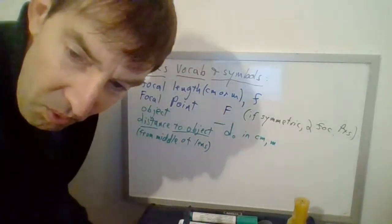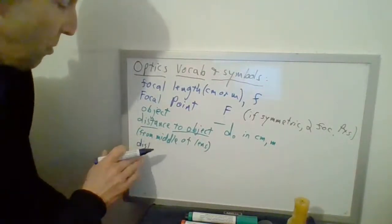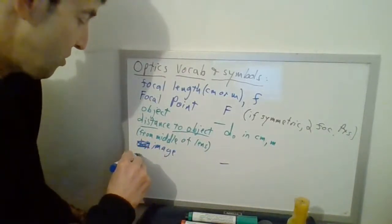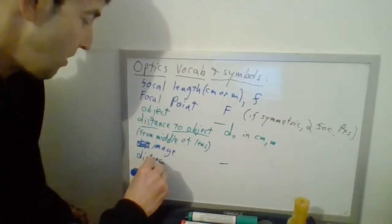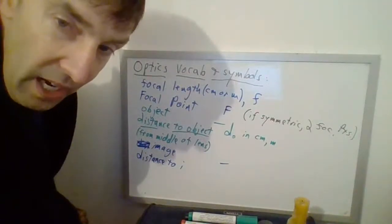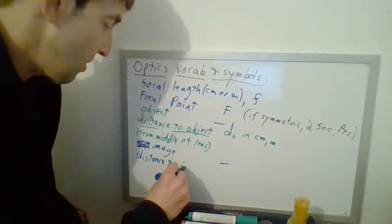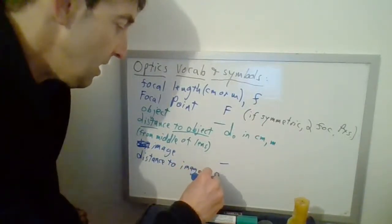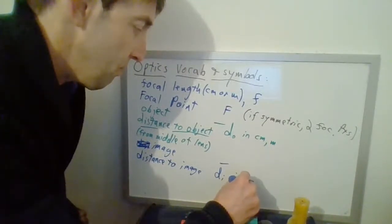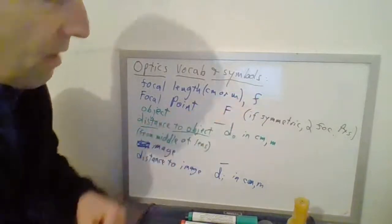The last thing is the distance to the image. We've got the word image. I don't have a symbol for image itself, but I do have distance to image — that's DI. We're going to use these symbols in formulas and in diagrams. DI is also in centimeters or meters. So we've got DI, DO, and small f as our three distances.